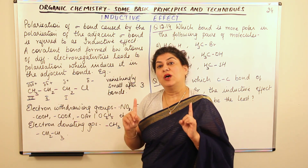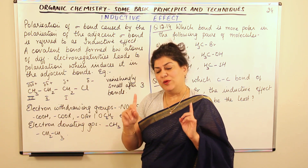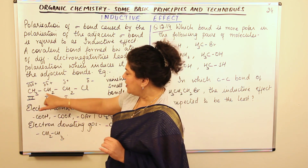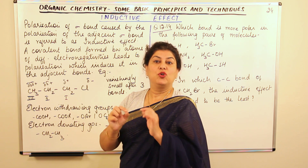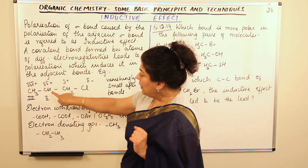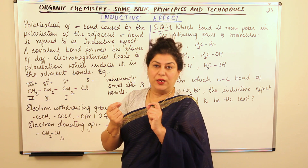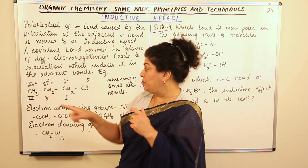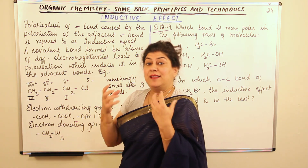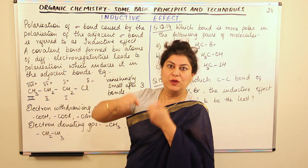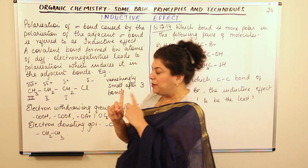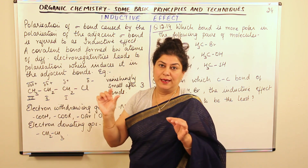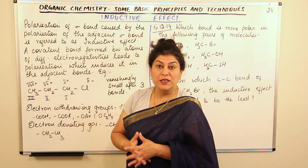Do you know how a covalent bond is formed? By the sharing of a pair of electrons. Both atoms — for example, carbon and carbon — contribute one electron each, which is shared equally by both of them. This shared pair of electrons holds them together, and since they are sharing it, it is represented by a line which represents a covalent bond.